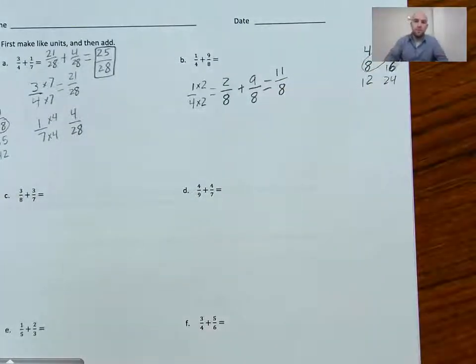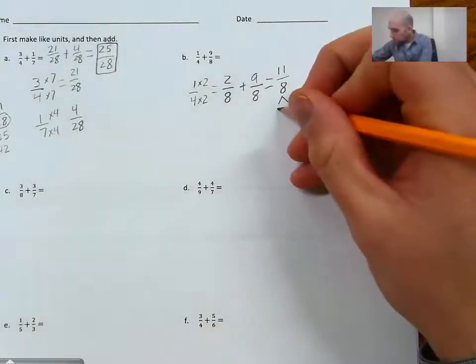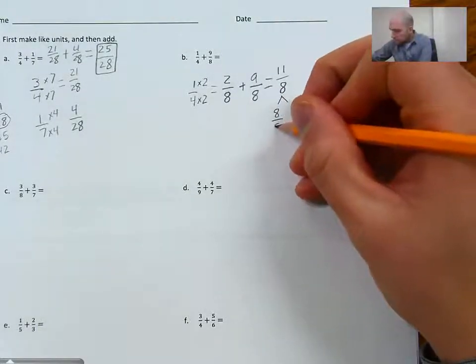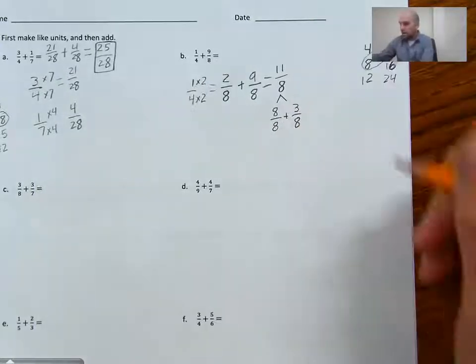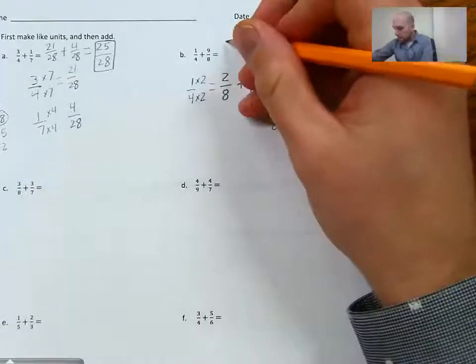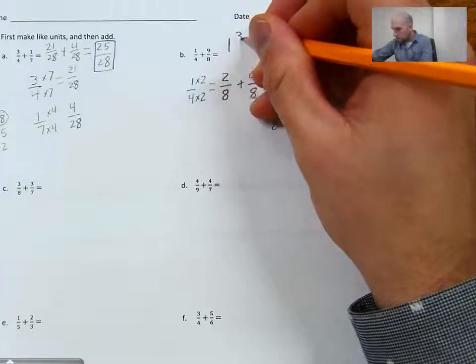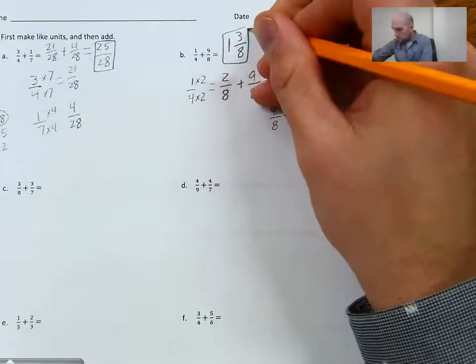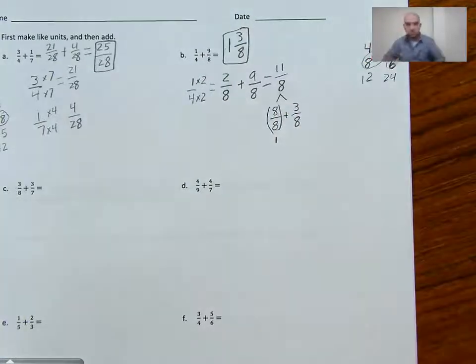I'm not done yet, because I don't want to express my answer as an improper fraction. I'd like to turn that into a mixed number. And I can kind of look at that this way. I can say, well, 11/8 is really 8/8 plus 3/8. And 8/8 is 1. So my answer is 1 and 3/8. This here would be 1.